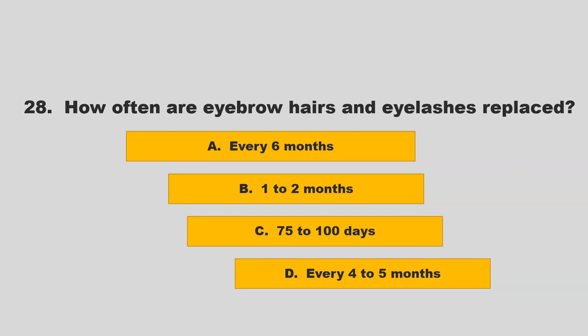How often are eyebrow hairs and eyelashes replaced? Is it every six months, one to two months, 75 to 100 days, or every four to five months? If you chose D, every four to five months, you are correct.